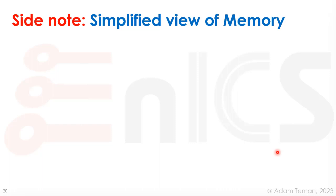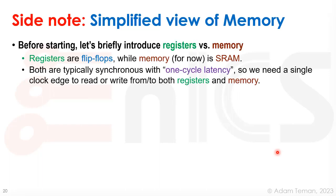Taking a side note to look at memory at a very simplified high-level view: the two things we'll discuss are registers, shown in green, and memory, shown in brown. Registers are basically flip-flops, and memory can be many different technologies — for now we'll assume SRAM. Both are typically synchronous and have what we call one-cycle latency. It takes one clock edge to perform either a read or write to both registers and memory.